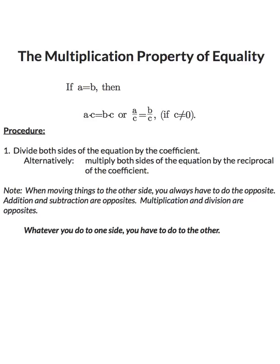When we use the multiplication property, make sure you do not change the sign when moving to the other side of the equation — that is special to addition and subtraction. Again, we have the same rule as before: whatever you do to one side you have to do to the other.